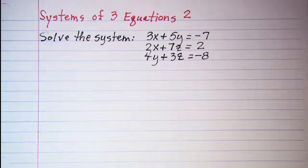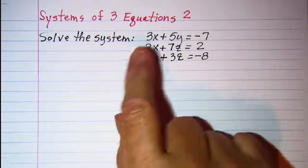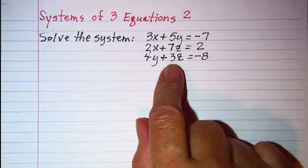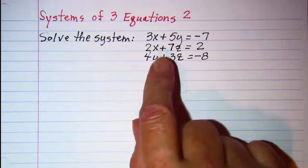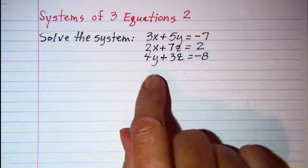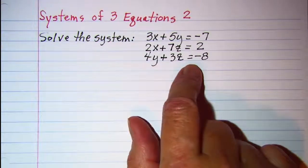In this video we'll be looking at systems of three equations. Our problem is to solve this system: 3x + 5y = -7, 2x + 7z = 2, and 4y + 3z = -8.